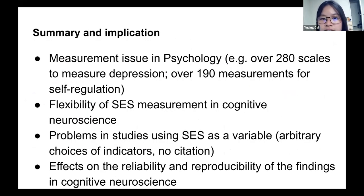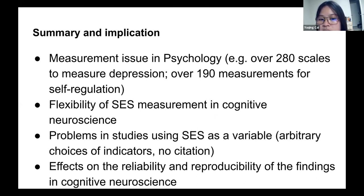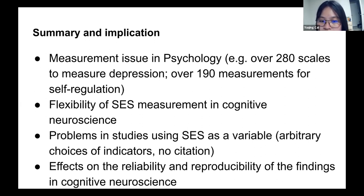So what can we imply from the current results? The measurement issue in psychology has been discussed a lot recently — for example, for depression and self-regulation, there are many different ways to measure those concepts. Similarly, for socioeconomic status, the flexibility of measurement has been found in the current study in the domain of cognitive neuroscience. This could be explained by the complexity of SES itself. Many studies arbitrarily choose different indicators and do not have citation or explanation for why and how they chose those indicators, and this could have an effect on the reliability and reproducibility of findings in cognitive neuroscience.